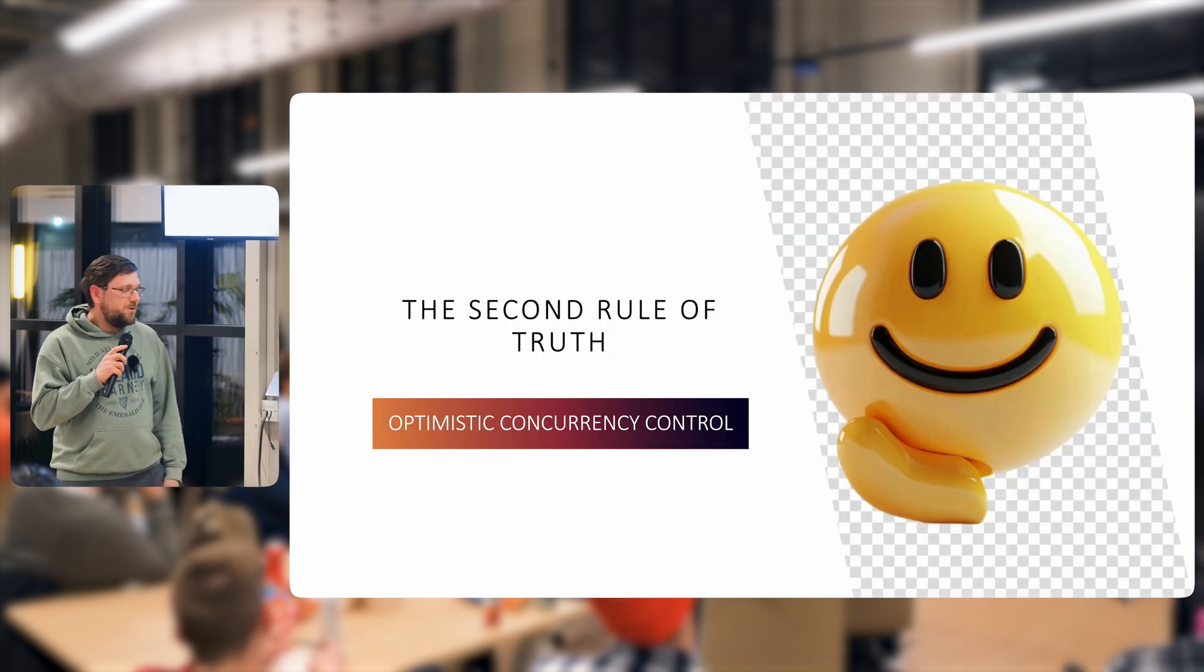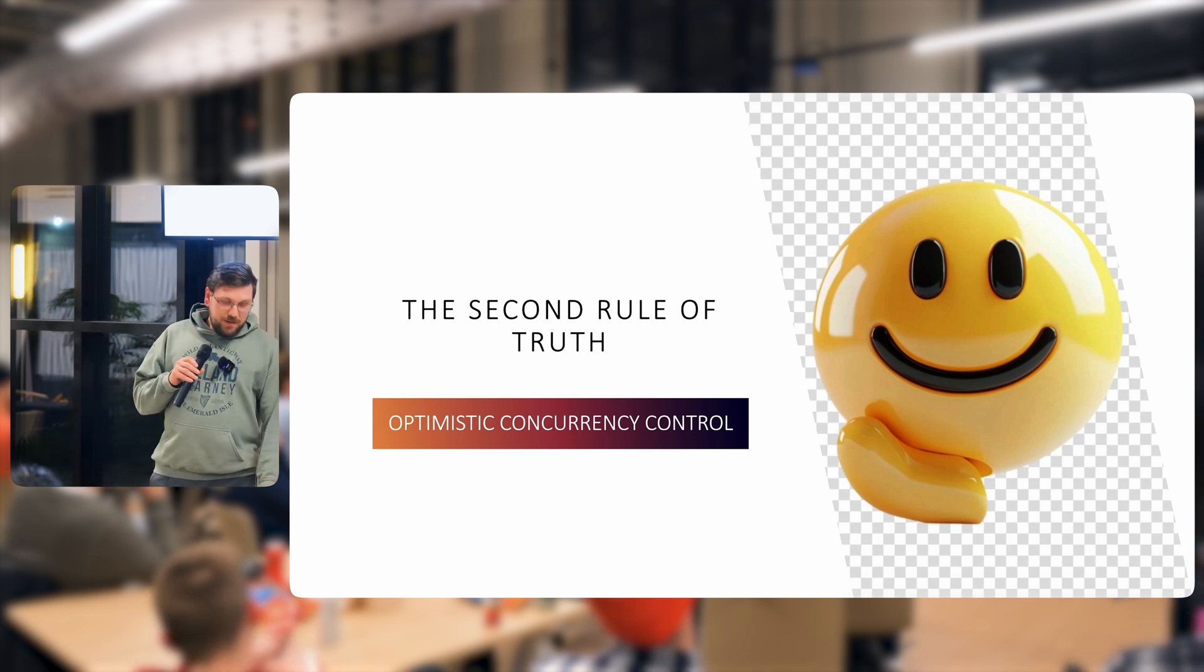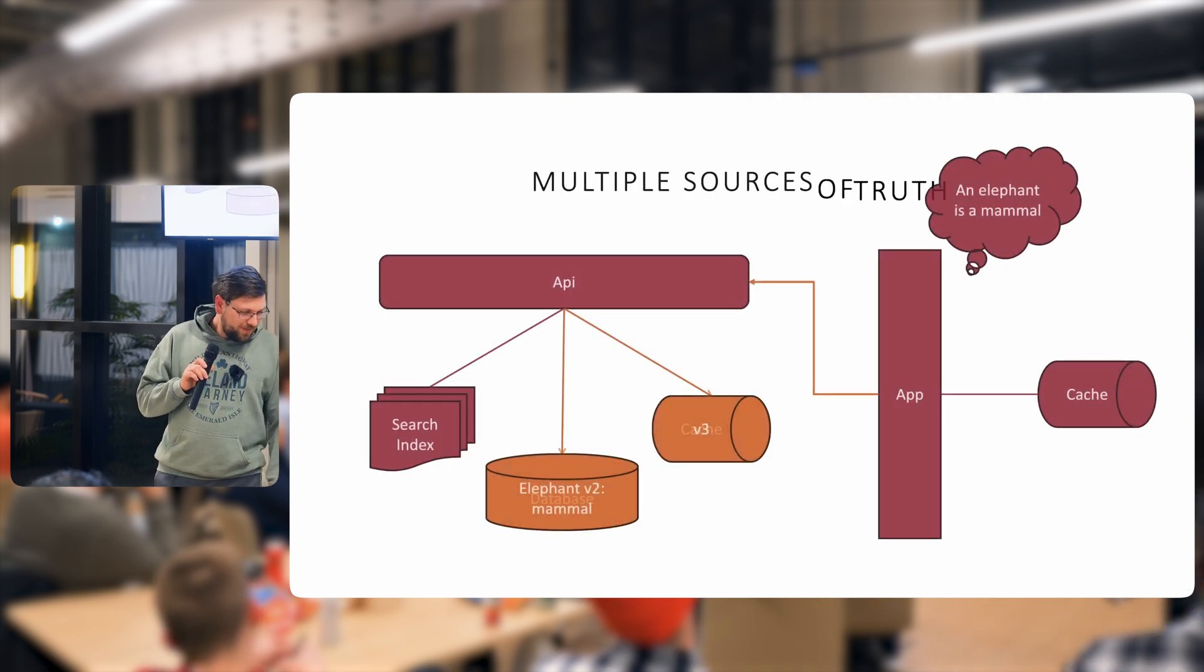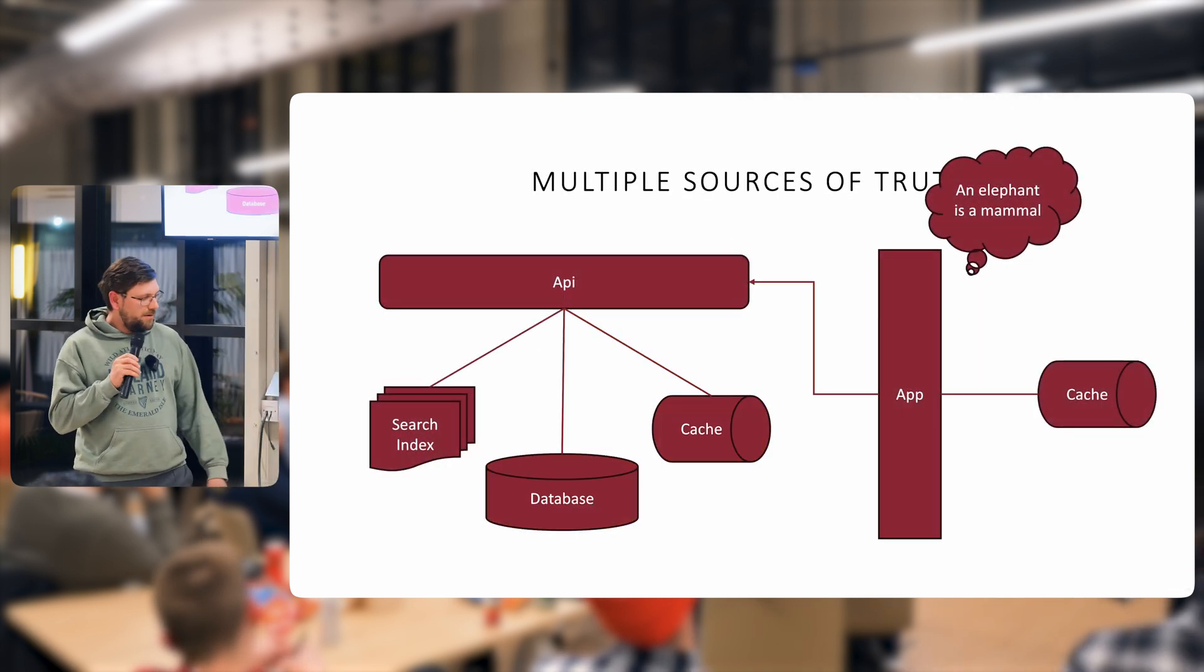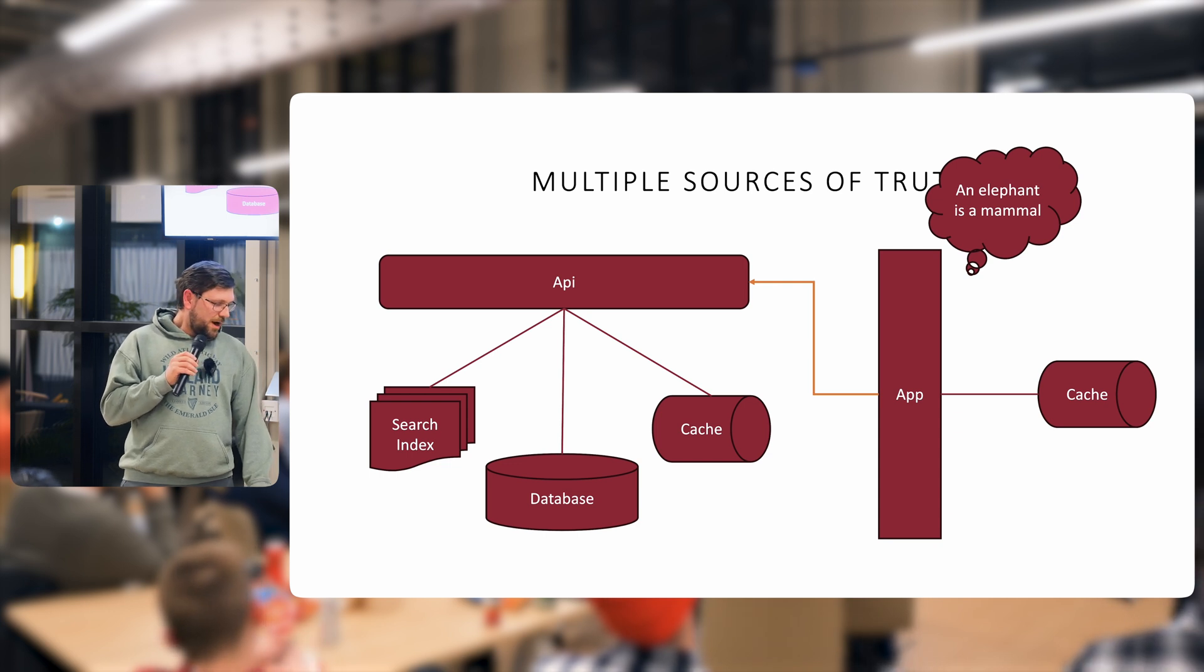So now we'll go to our second rule of truth, which is optimistic concurrency control. Because even though we might commit or write to our cache after our commit, we have another bug. So we'll come back to here and we will do our API request, which we will call our database.